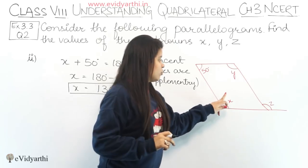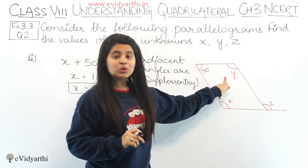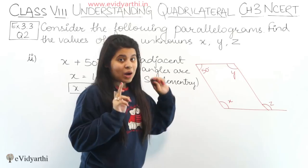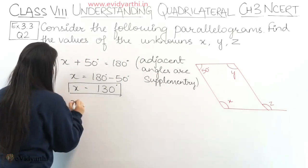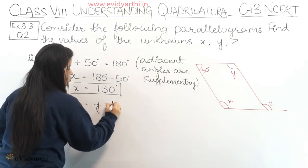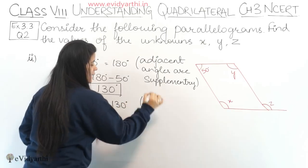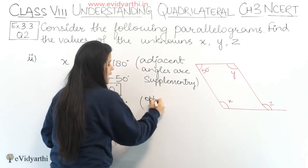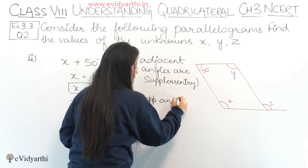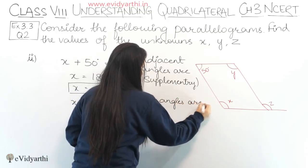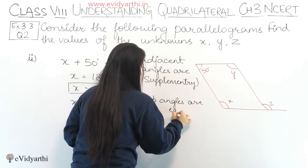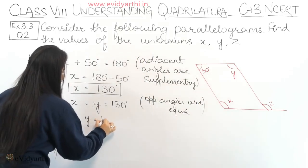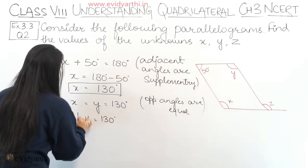Now, x = y because they are opposite angles. So x equals y equals 130°. The reason: opposite angles of a parallelogram are equal. Therefore y = 130°.